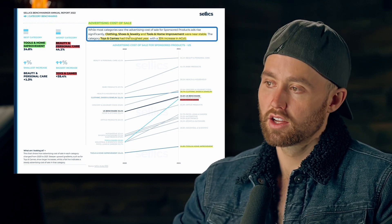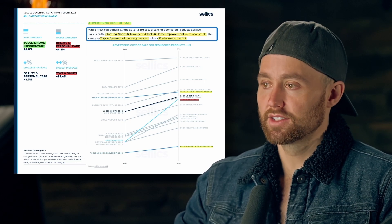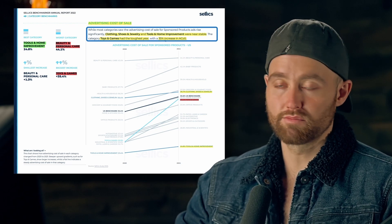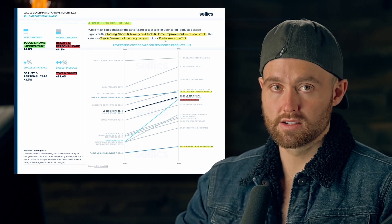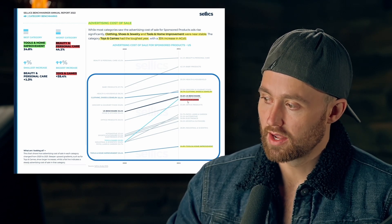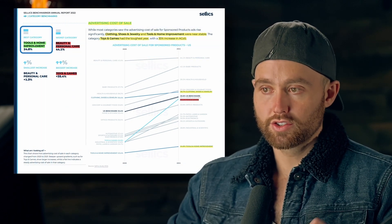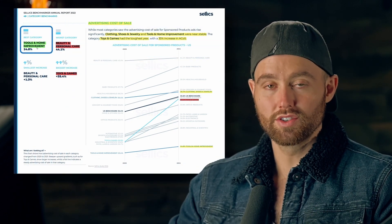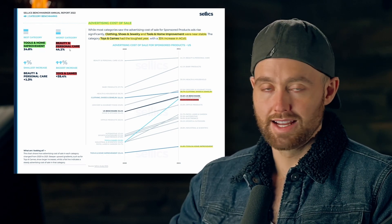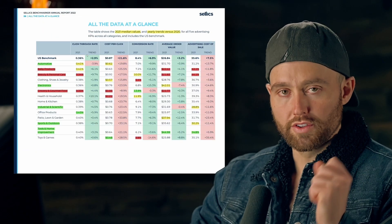For ACoS, most categories saw a rise. Clothing, shoes and jewelry and tools and home improvement were stable. Toys and games had the toughest year with a 35 percent increase in ACoS — you can see the line going straight up — so that one does not have very profitable advertising at this point. The best category is tools and home improvement, with a very high average order value of almost $45. The worst category for ACoS is beauty and personal care.